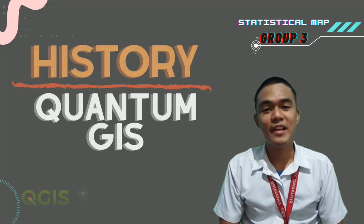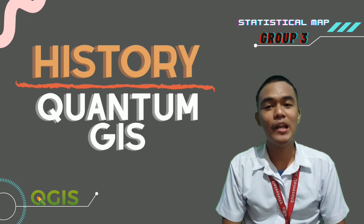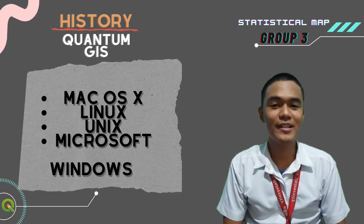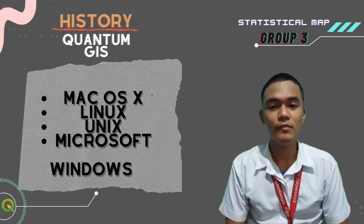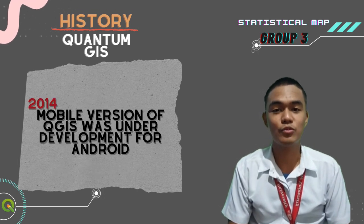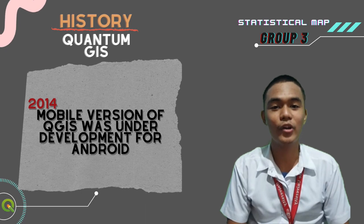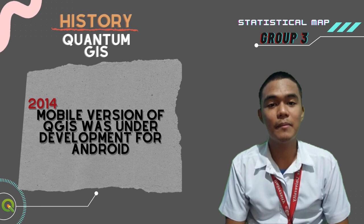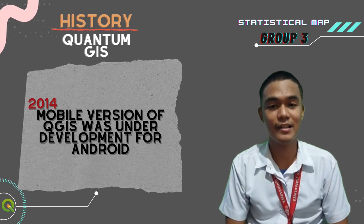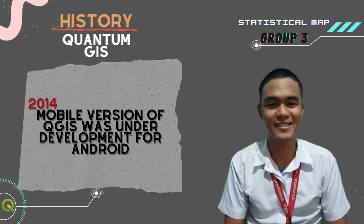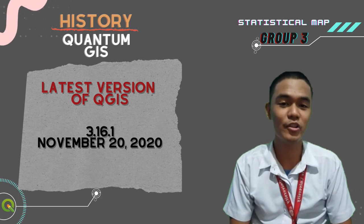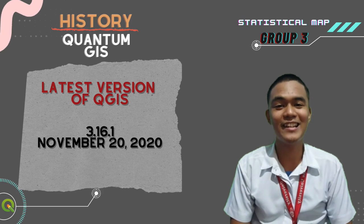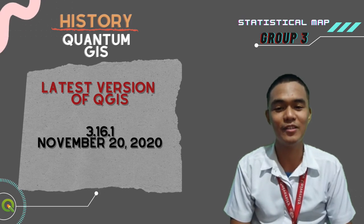As of 2017, QGIS is available for multiple operating systems including Mac OS X, Linux, Unix, and Microsoft Windows. A mobile version of QGIS was under development for Android as of 2014. QGIS is maintained by volunteer developers who regularly release updates and bug fixes. As of now, the latest version of QGIS is 3.16.1, released on November 20, 2020.